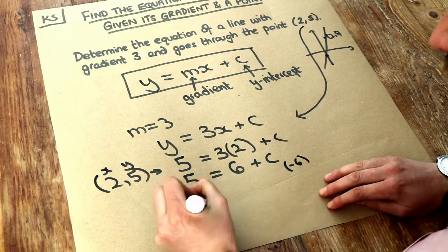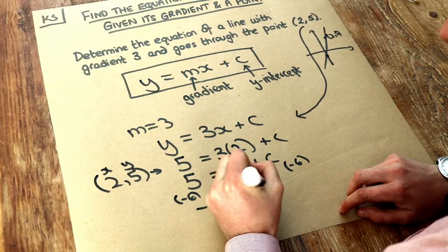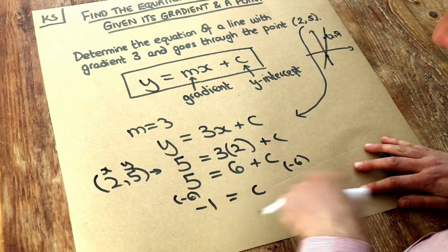5 minus 6 is minus 1. And 6 minus 6, that gets rid of that 6, and we're just left with c. We can see that 6 plus negative 1 is 5, so c is minus 1.